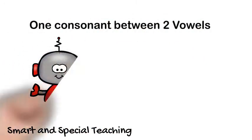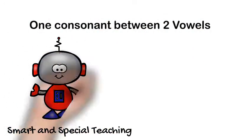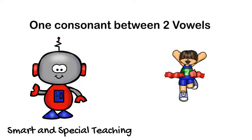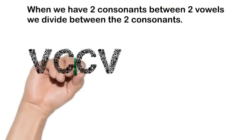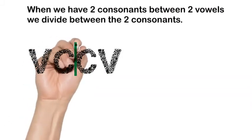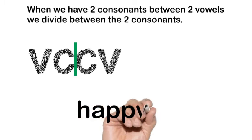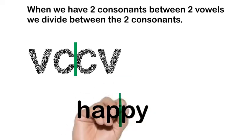Let's read some words with one consonant between two vowels. We know that if we have two consonants between two vowels, we divide between the two consonants. Like in the word happy, we divide between the two P's. We have a closed syllable, hap, and an open syllable, py. Happy.